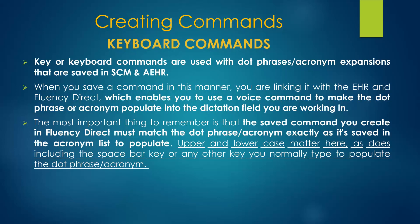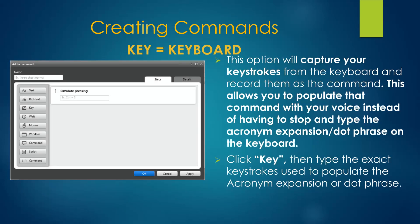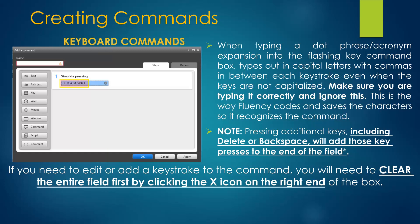This means they are case-sensitive and must include every keystroke of the original. When creating key commands, Fluency captures every keystroke you make. You must type precisely the exact keystrokes used to call up the acronym or dot phrase. This example will create a command to expand a dot exam acronym in SCM. Ignore what you see as you type — what appears in the box will not be words, but representations of those keystrokes. Lowercase letters will appear here as uppercase, and uppercase letters will show the word Shift in front of them. It is imperative that you type it correctly, as any extraneous keystrokes will corrupt the command. If you make an error, clear the Simulate Pressing box by clicking on its X and start over.